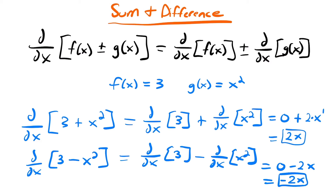That is how we use the sum and difference rules. Just like the constant multiple rule, we don't typically write out all the intermediate steps — we just go ahead and take a derivative of each part and skip right to the result. So when you see terms added or subtracted together, you can just take the derivative of each part separately and either add or subtract them. Now let's look at some examples using all these rules.